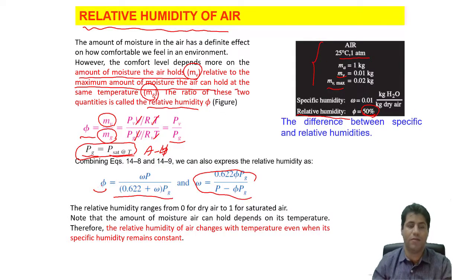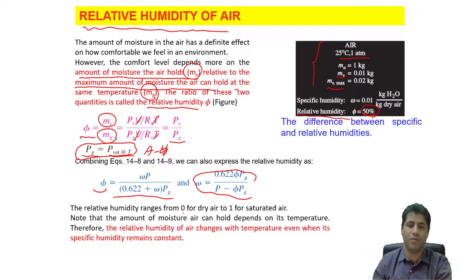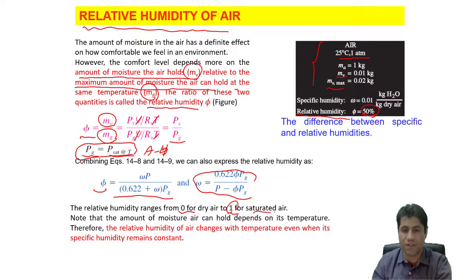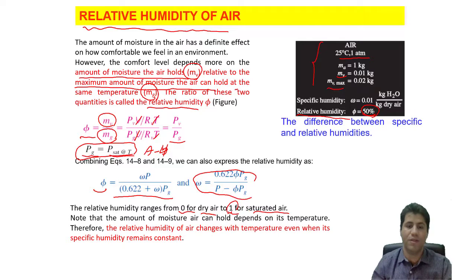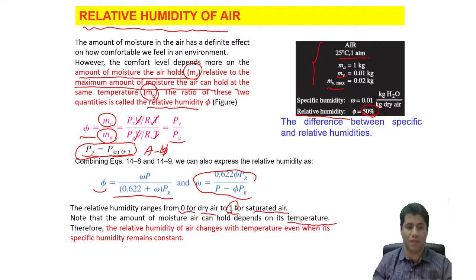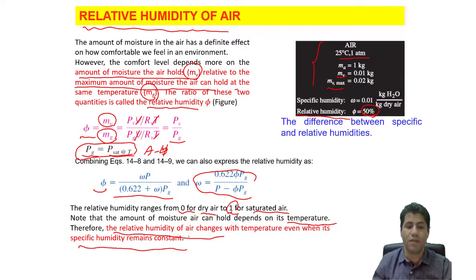Relative humidity is a number between 0 and 1, or 0% to 100%. For saturated air, φ = 100%; for dry air with no water vapor, φ = 0%. Also notice: the amount of moisture which air can hold depends on temperature, so relative humidity changes with temperature even when specific humidity remains constant. This sentence is very important and we will see its effects later.